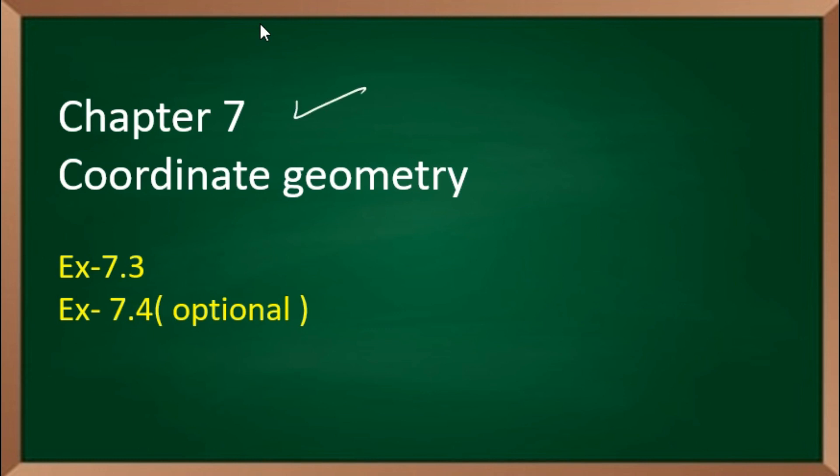Next chapter number 7, Coordinate Geometry. Exercise 7.3 you don't have to do, 7.4. That means that you have to do 7.1 and 7.2.